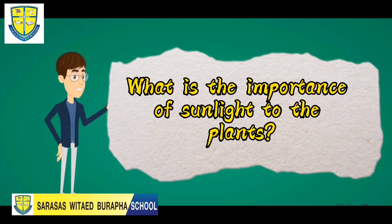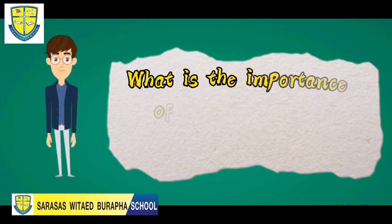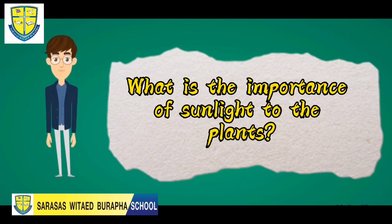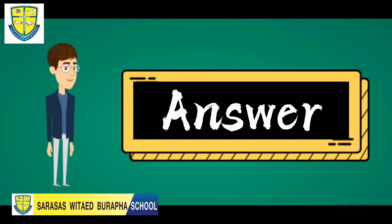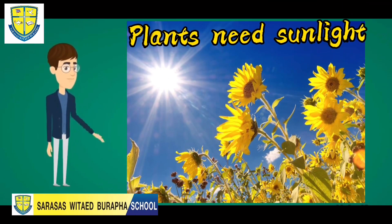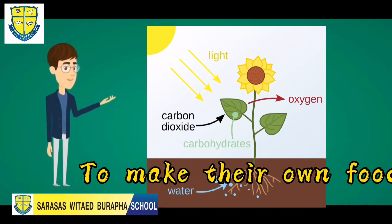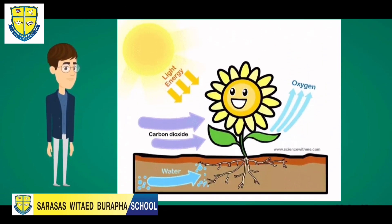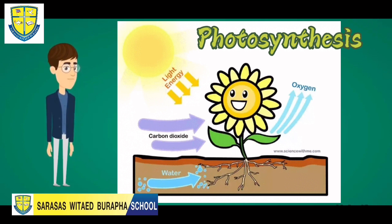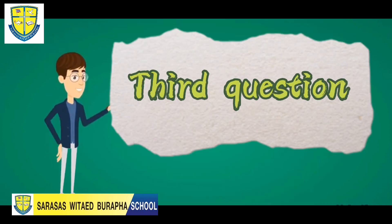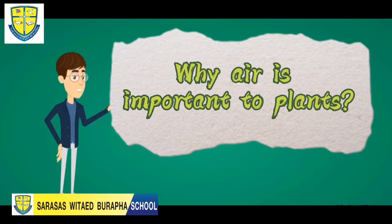The next question is: what is the importance of sunlight to plants? The answer is plants need sunlight to make their own food, and this process is what we call photosynthesis.